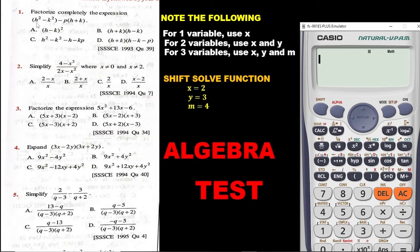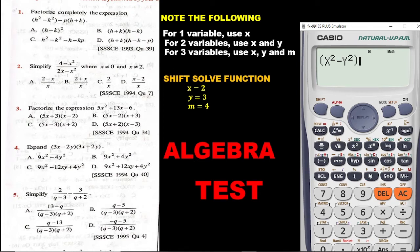Let's now enter this expression on the calculator. First, open the bracket. In place of H we are putting X — click alpha and then click X, then square it. Then we have minus K squared: in place of K we put Y, so click alpha and then Y, then square the Y. Now we need to close the bracket.